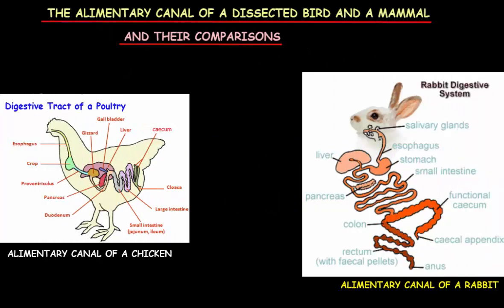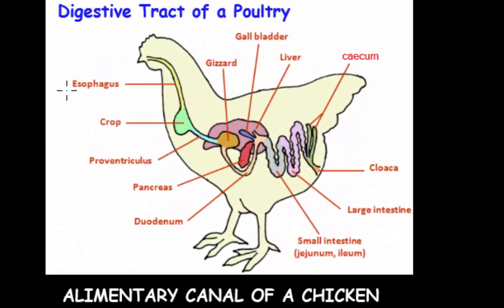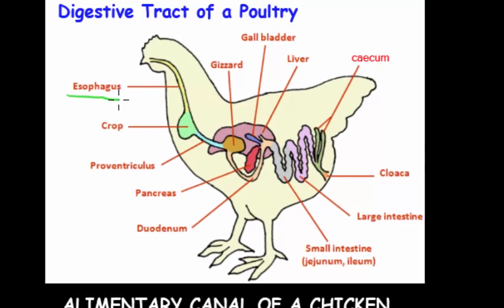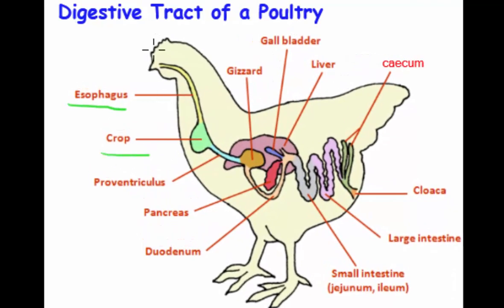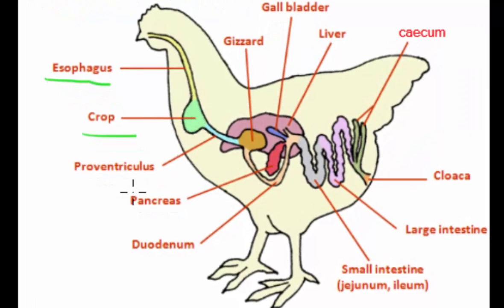Welcome back. This is the alimentary canal of a dissected bird. One of the best examples we'll be talking about is the chicken. The parts of the chicken's alimentary canal include the esophagus, where the food passes into, then straight to the crop, and also the proventriculus.